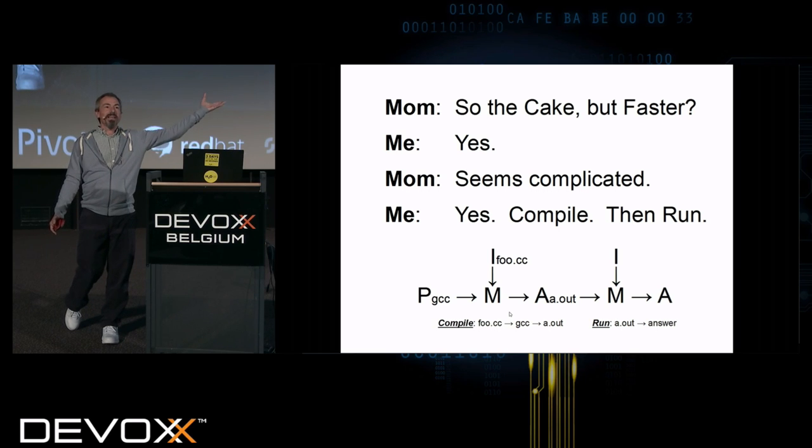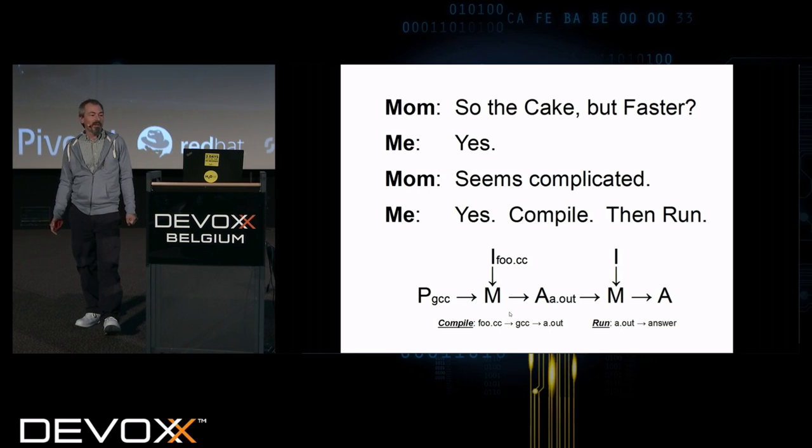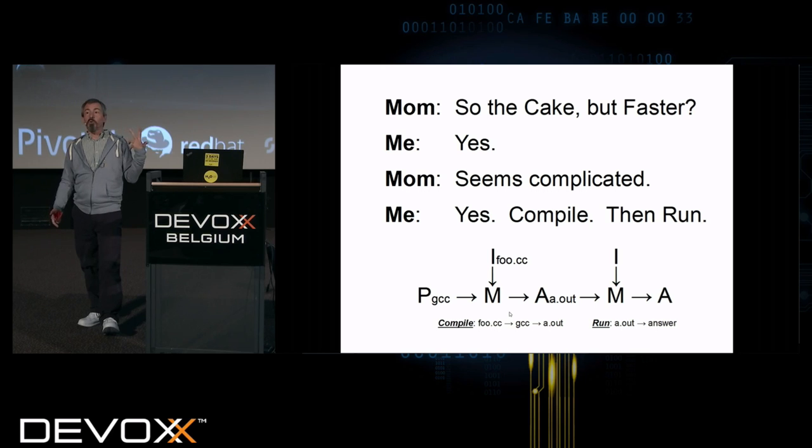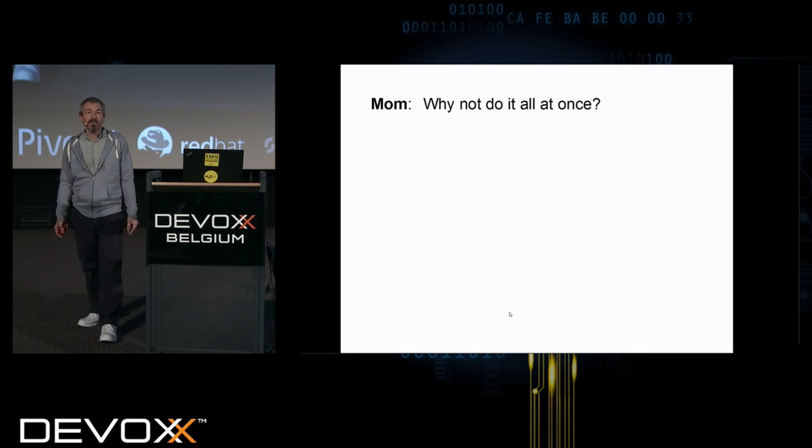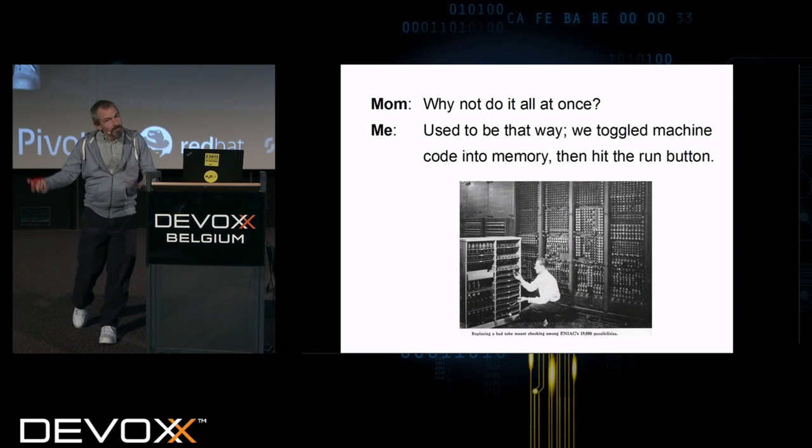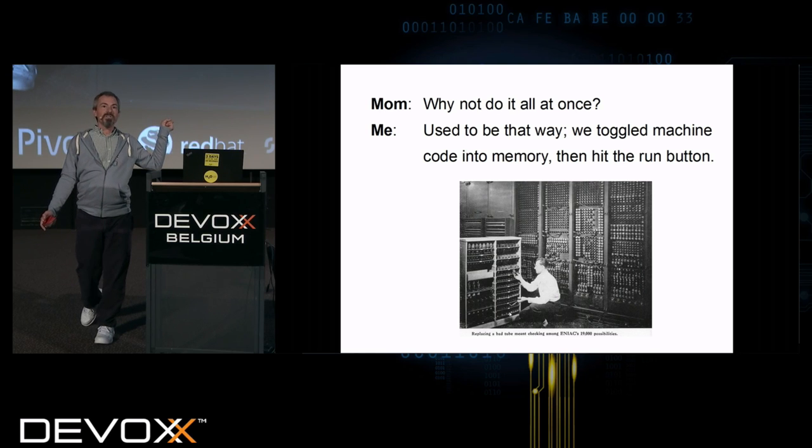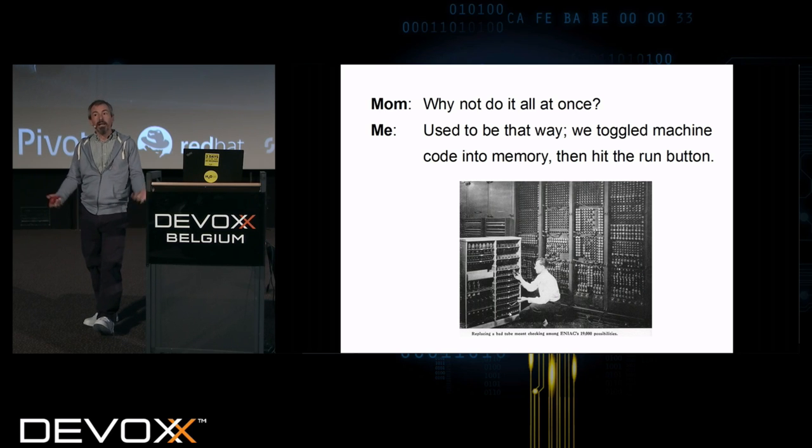GCC on the left takes a foo.cc program, runs it through the machine. It produces an a.out, a pile of machine instructions, which are then run through the very same machine to read the inputs from the real world to produce the answer I'm really looking for. Two steps. Well, why not do it all at once? It used to be that way when we toggled machine code into memory and then hit the run button. Way back in the day, I did machine code toggling into actual machines. And I hit the run button.